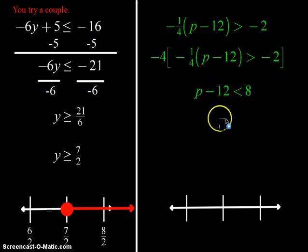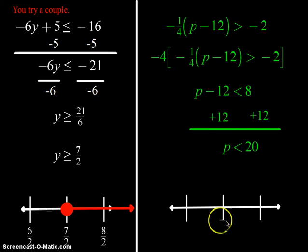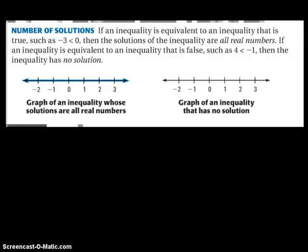Next thing I'm going to do is add 12 to both sides, and I'm left with P is less than 20. Go ahead and graph it. Put in your number line, and it's going to be an open circle, and we are going to shade in to the left.